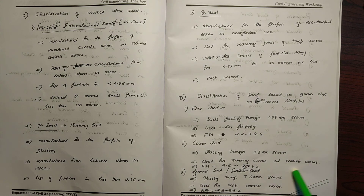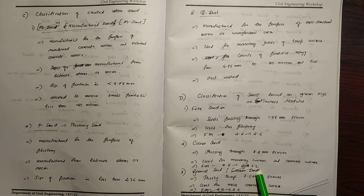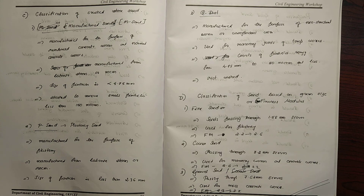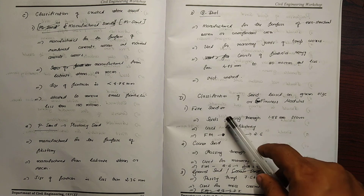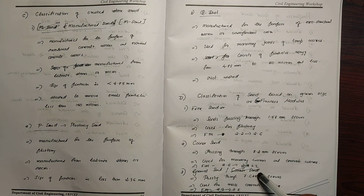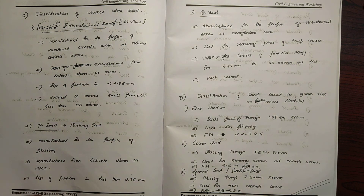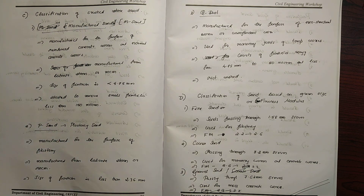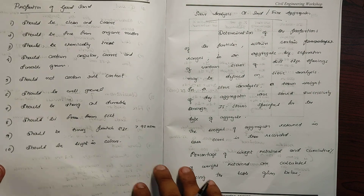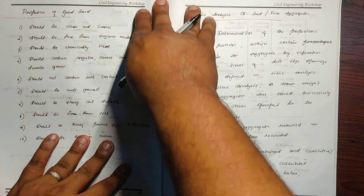Fine sand is used for plastering; coarse sand is used for masonry and concrete; gravel sand is used for mass concrete. The classification includes fine sand, medium sand, and gravel sand. Now we will discuss the properties of good sand.